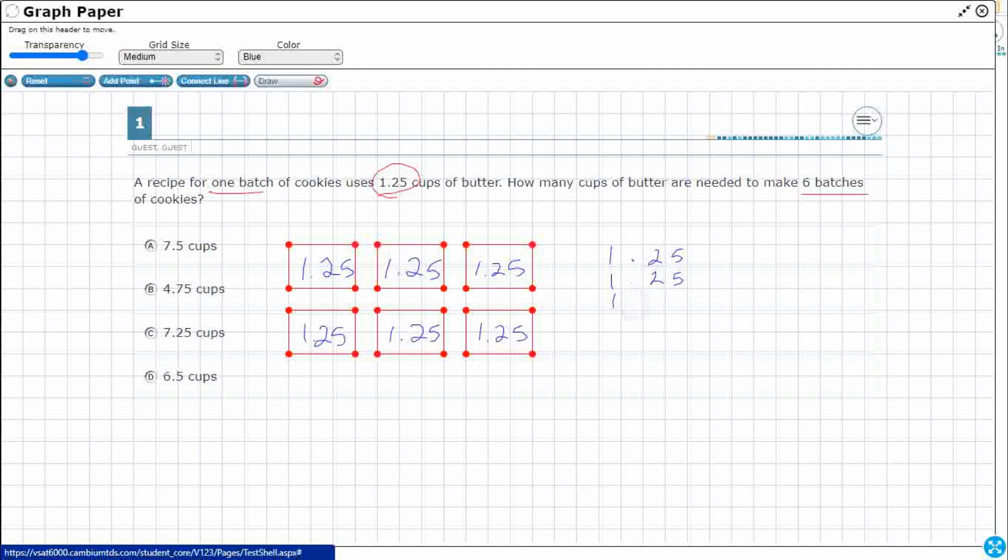Six sets of 1.25. If you wanted to do that you would also be correct. So let's do both ways. Let's do six sets of 1 and 25 hundredths and then we'll also do 1.25 times six.